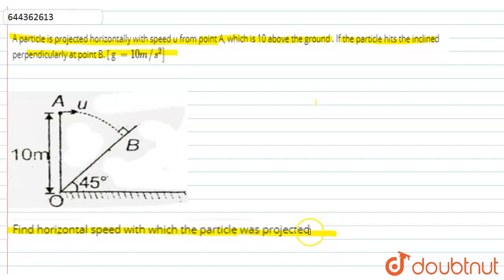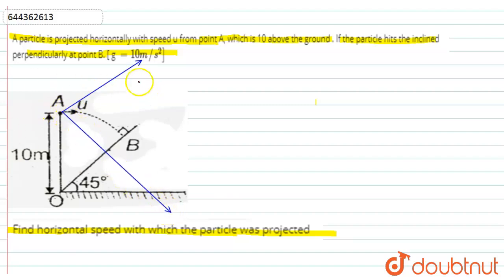We have to find the speed u. According to this figure, A is 10 meters above the ground and this angle is 45 degrees. We consider this as the x-axis and this as the y-axis. This angle is equal to 45, and from geometry we can see that u makes angles of 45 degrees in both directions.